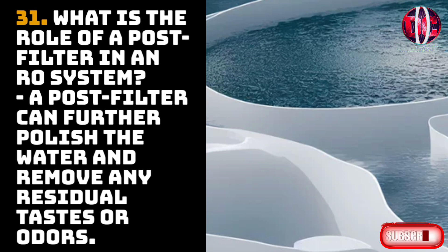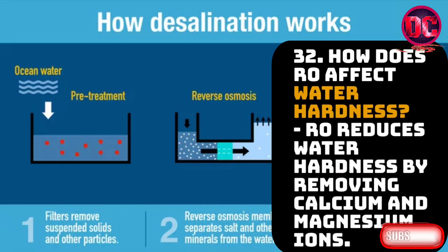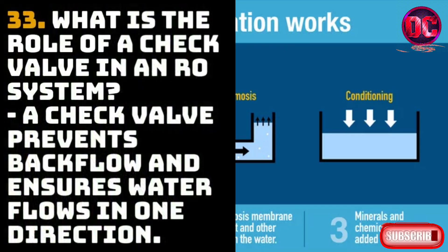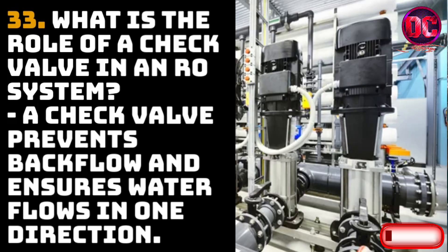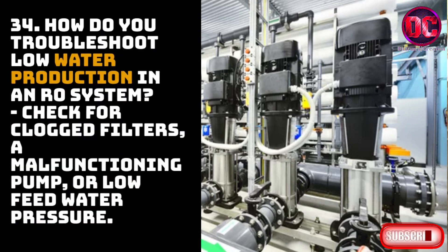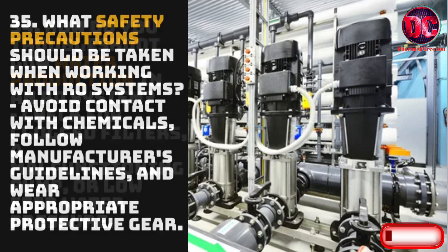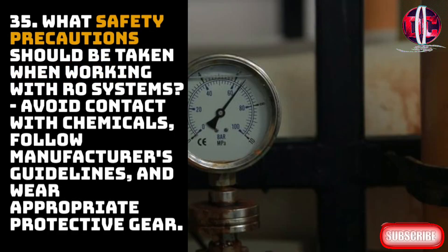31. What is the role of a post-filter in an RO system? A post-filter can further polish the water and remove any residual taste or odour. 32. How does RO affect water hardness? RO reduces water hardness by removing calcium and magnesium ions. 33. What is the role of a check valve in an RO system? A check valve prevents backflow and ensures water flows in one direction. 34. How do you troubleshoot low water production in an RO system? Check for clogged filters, a malfunctioning pump, or low feed water pressure. 35. What safety precautions should be taken when working with RO systems? Avoid contact with chemicals, follow manufacturer's guidelines, and wear appropriate protective gear.